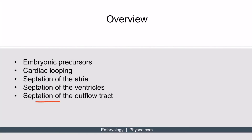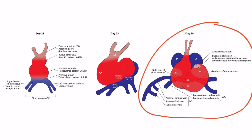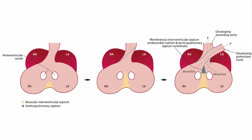Let's finish up by discussing septation of the outflow tract. The heart has folded into a unique shape, so let's take a frontal section through the ventricles to see inside of the truncus arteriosus. Blood from the atria enters the ventricles through the atrioventricular canals, and the muscular portion of the interventricular septum is beginning to grow upward. The aorticopulmonary septum is beginning to form in the outflow tract as neural crest cells and endocardial cells migrate to this area. If neural crest cells fail to migrate, conotruncal cardiac abnormalities can develop, such as tetralogy of Fallot, transposition of the great vessels, and persistent truncus arteriosus.